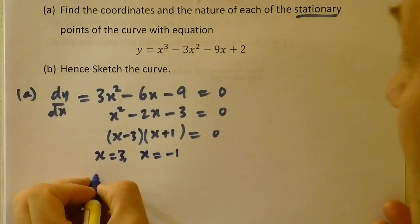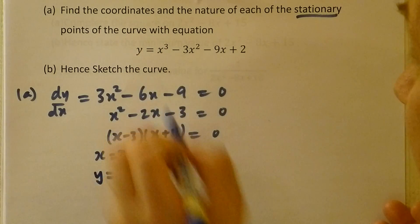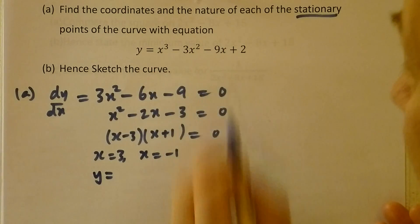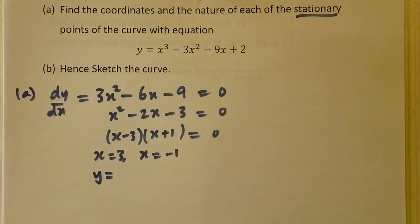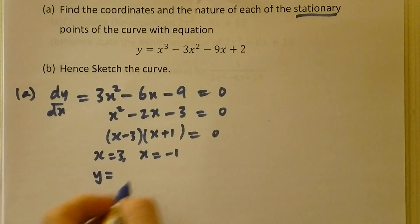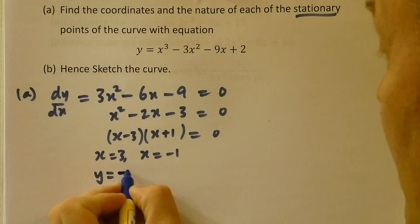If I put 3 into the equation up here, we'll find the y-coordinate, which happens to be 27 (3 cubed), minus 27 (3 lots of 3 squared), minus 9 lots of 3, so 27, plus 2. So that gives me a total of -25.